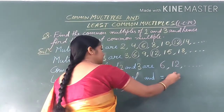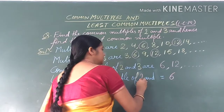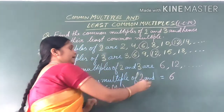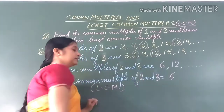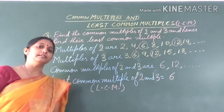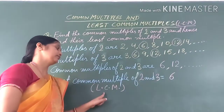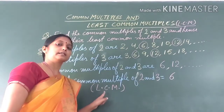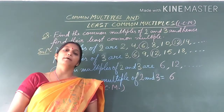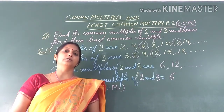So the least common multiple of 2 and 3 is 6. LCM of 2 and 3 is 6. This is how we can find common multiples and the least common multiple. Thank you.